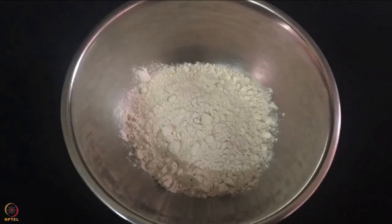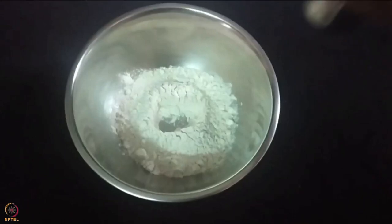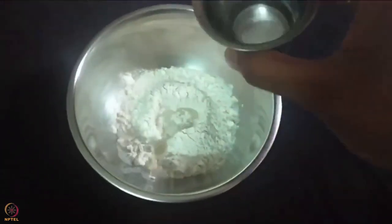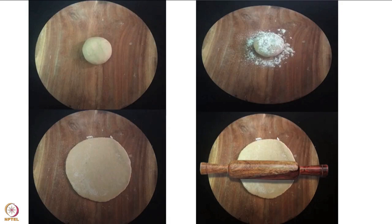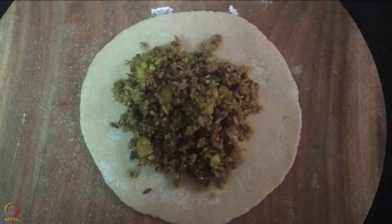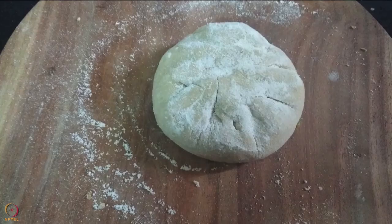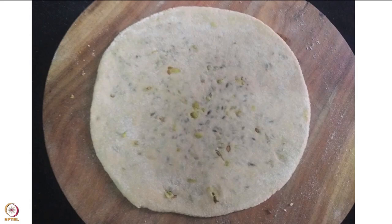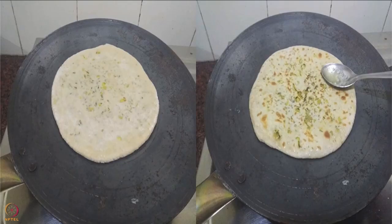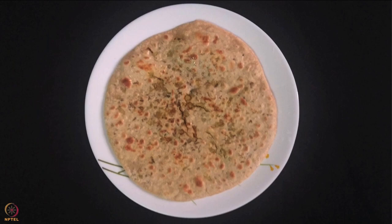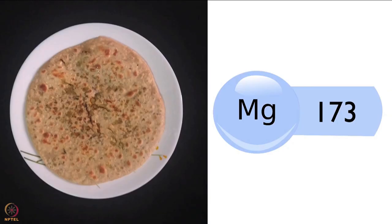To make the paratha, take the flour in a bowl and knead a dough by adding sufficient water. Flatten the dough using a rolling pin, place the cowpea paste on the flattened dough, cover from all sides, dust some flour, and roll into a paratha. Heat a pan and cook the paratha on both sides applying ghee or oil. Cowpea sprouts paratha is ready — one paratha contains around 173 milligrams of magnesium.